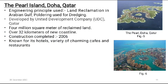Second case study: The Pearl Island, Doha, Qatar. Engineering principles used are land reclamation in the Arabian Gulf and poldering used for dredging. Developed by United Development Company (UDC), Qatar — 4 million square meters of reclaimed land and over 32 kilometers of new coastline. Construction was completed in 2006, and it is known for its hotels, a variety of charming cafes, and restaurants.